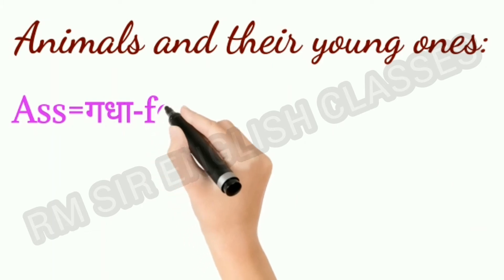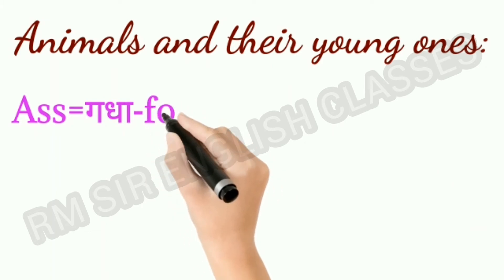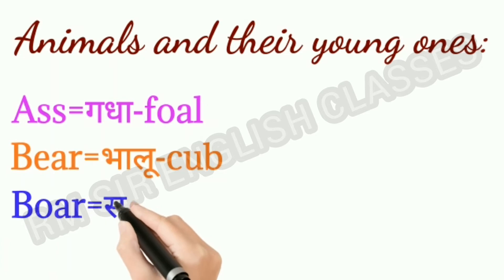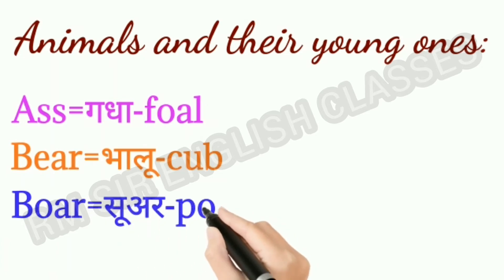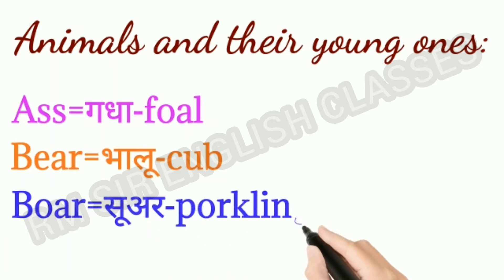Ass means gadha. The baby ass is called foal. Bear means bhalu. The baby bear is called cub. Boar means sewer. The baby boar is called porkling.